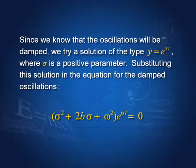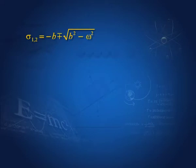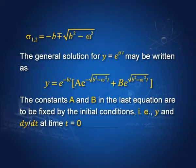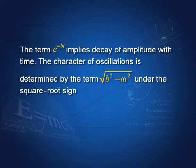Therefore, from this equation we get σ² + 2bσ + ω² = 0, and this is a quadratic. It will have two solutions, two values of σ, and these two values are given by: σ = -b ± √(b² - ω²). The general solution therefore will be y = e^(-bt) · [A·e^(√(b²-ω²)·t) + B·e^(-√(b²-ω²)·t)]. A and B are two constants determined from initial conditions, that is conditions at t = 0, if we know y and dy/dt at t = 0.